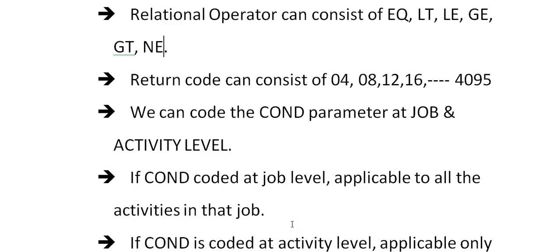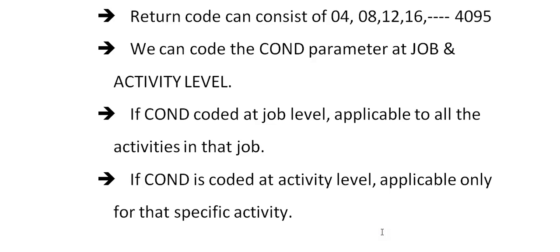If COND is coded at job level, it is applicable to all the activities in that particular job. For example, if you have 10 steps in a job and you write the COND parameter at the job level, it is applicable to all 10 steps. Based on your requirements, you can choose whether to code COND at the activity level or at the job level. If COND is coded at activity level, it is applicable only to that particular activity or step.